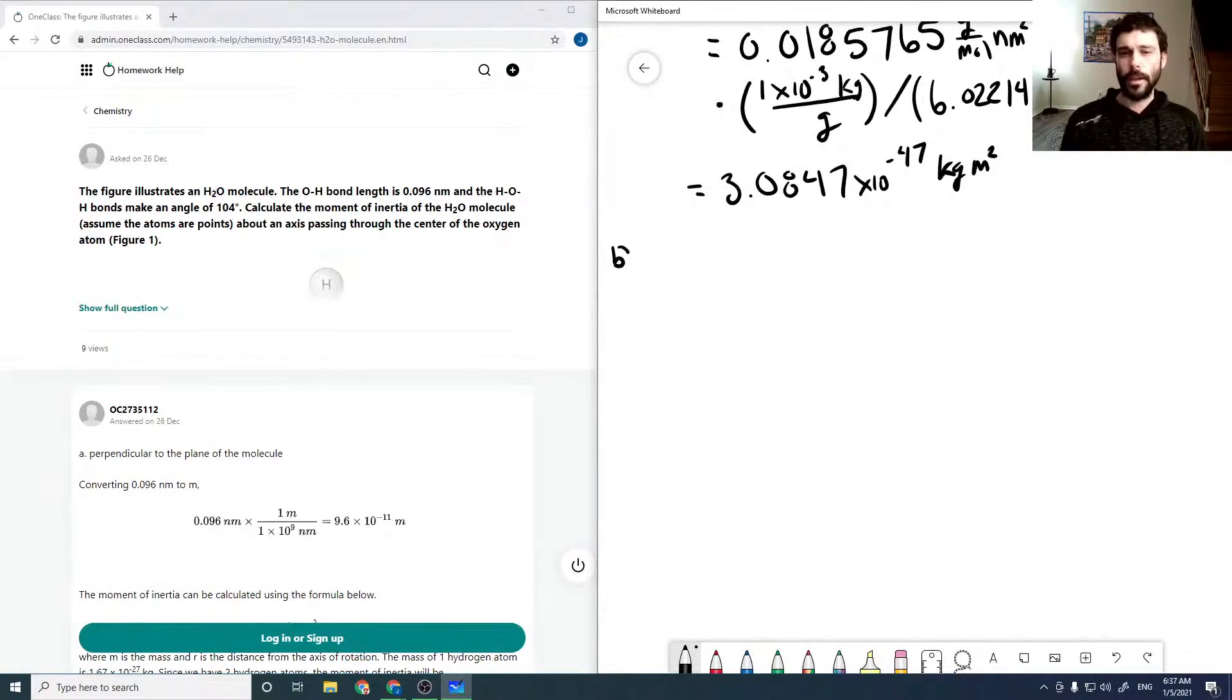So part B just asks for an axis which bisects the angle. And I'm just going to try to draw that a little better than I did the first time. So again, we have our ROH. So now our moment of inertia is still the sum of our masses times our perpendicular distance squared. So now our perpendicular distance to our hydrogens is this distance, where that is still our angle, which means, since it bisects the angle, that the angle in here is 52 degrees, as the full angle is 104.